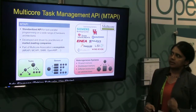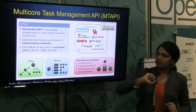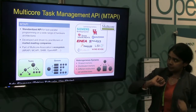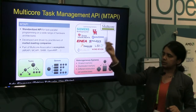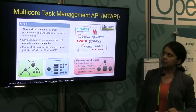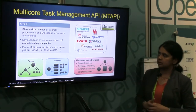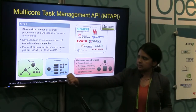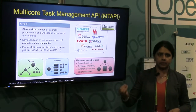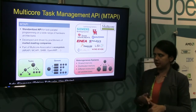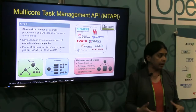The MTAPI is a standardized API for task-parallel programming on a wide range of hardware architectures, developed and driven by several market-leading companies. MRAPI, MCAPI, SHIM, and OpenMP are members that contributed to MTAPI. MCA itself has many more members. The task and queue API concept is designed to manage systems that can have shared memory, distributed memory, different instruction-set architectures, and even bare metal environments.